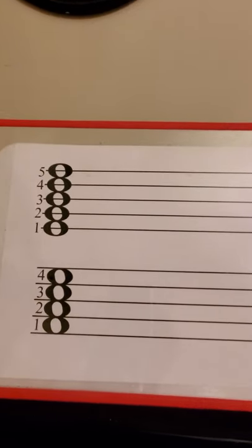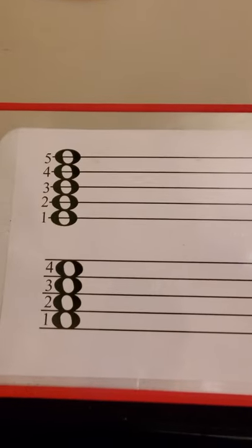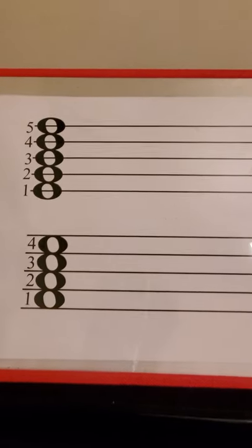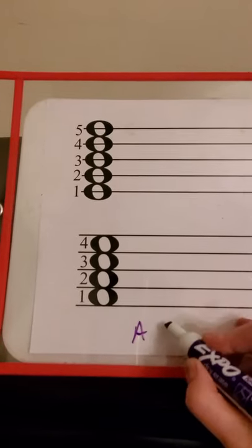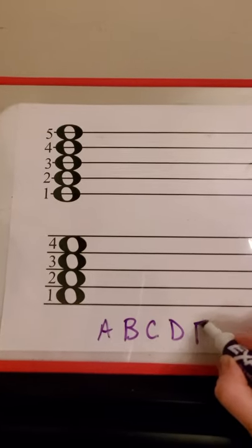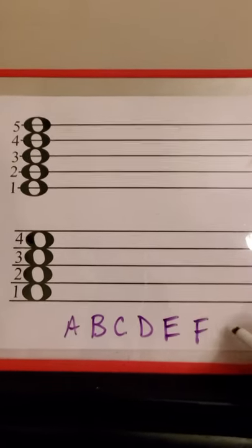We don't know what any of the lines or spaces stand for until we give it a letter or some sort of designation, but once we state where one of the letters are, we know where all of the other letters are because we have a musical alphabet that always goes in order. So our musical alphabet is A, B, C, D, E, F, and G.